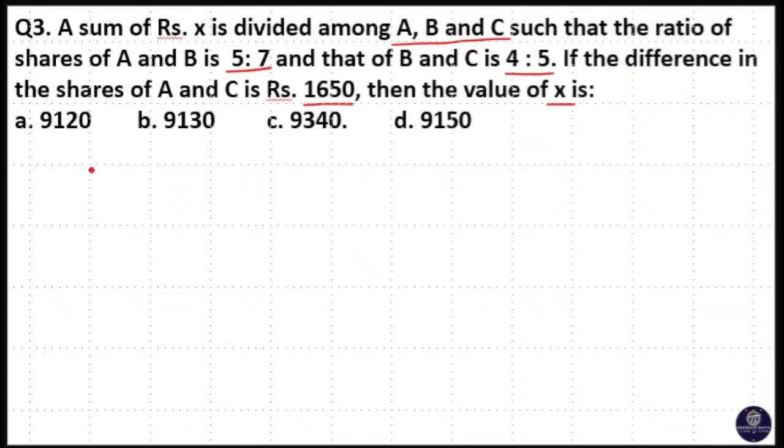So, we have 3 persons A, B, C. Rupees X is divided between them. A and B have 5:7 and B and C have 4:5. The difference between A and C's share is 1650. We have to find the value of X.